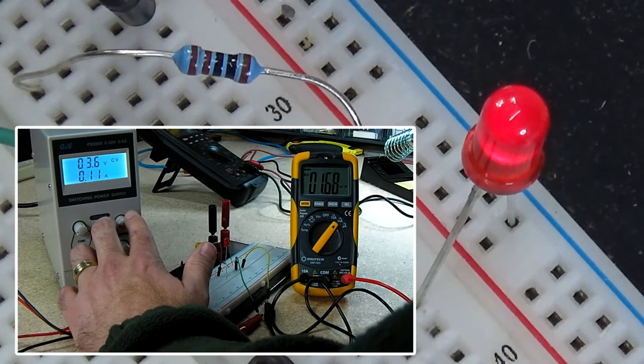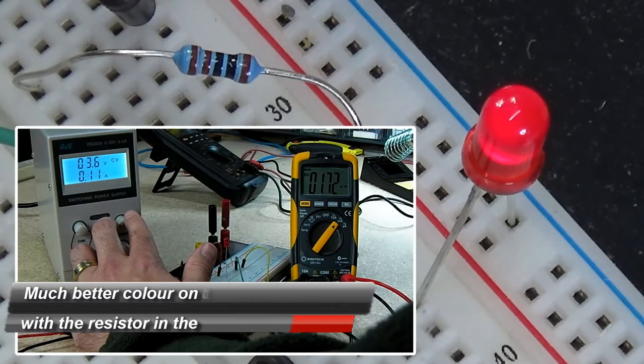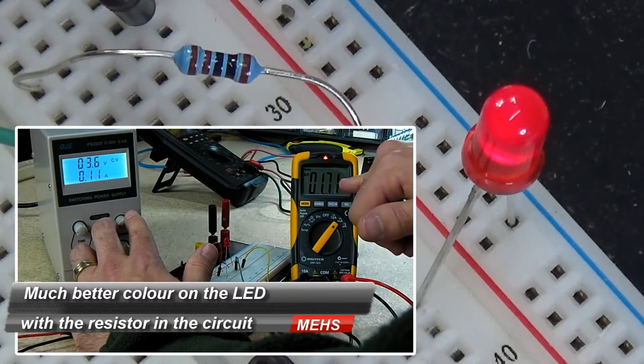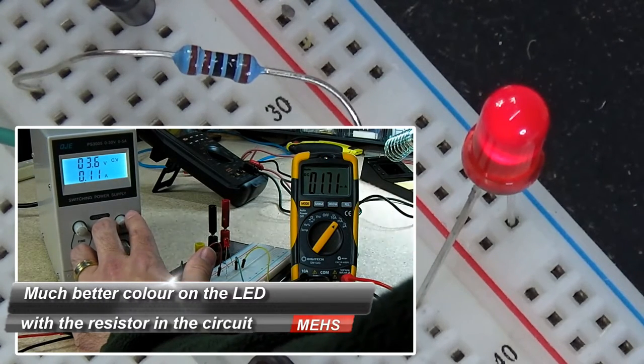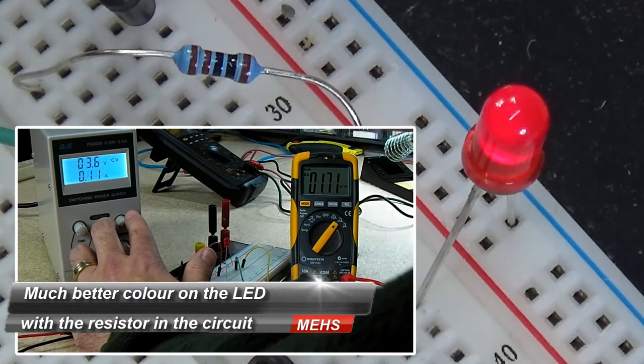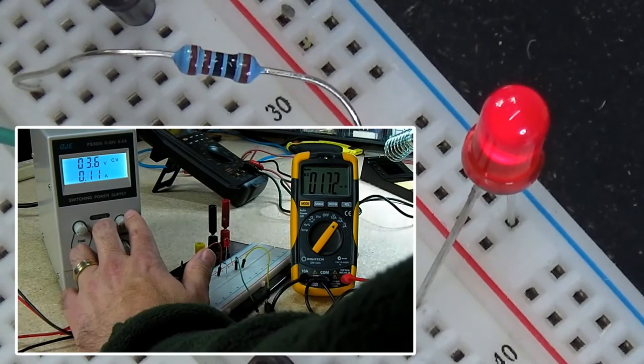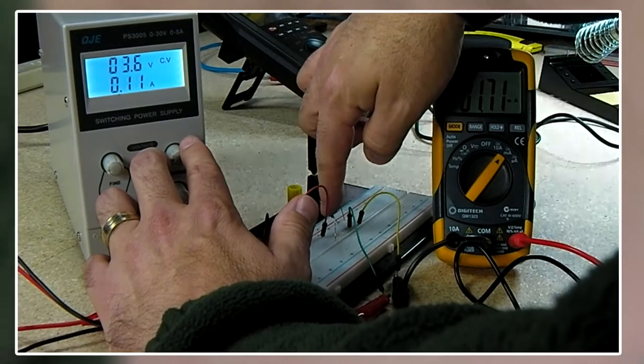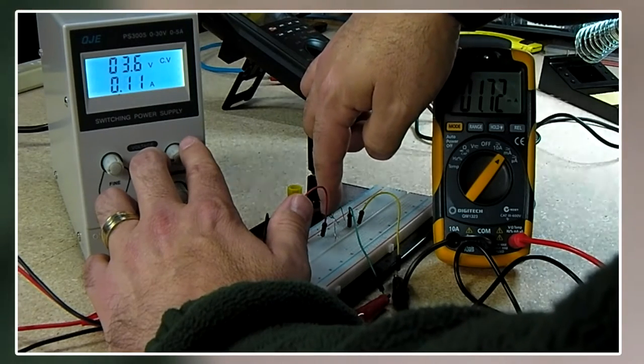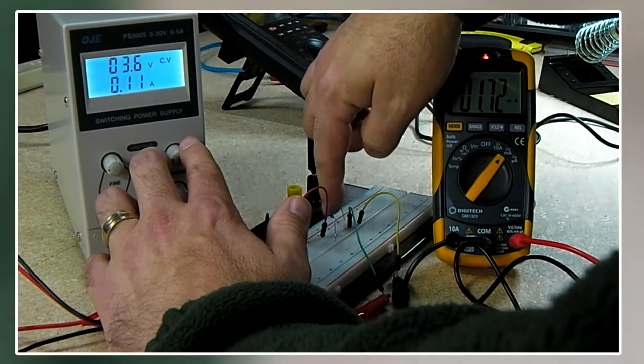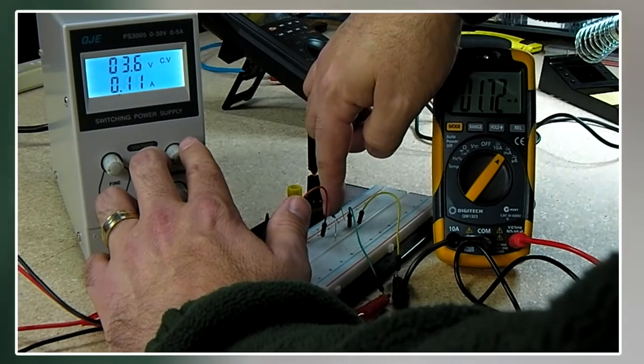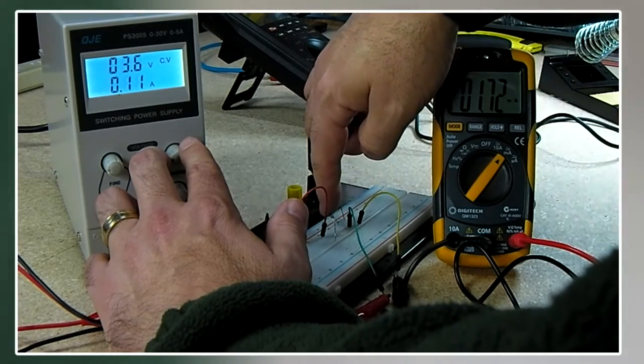Alright, so we're now getting some illumination on that LED. And that's 3.6V. And we're getting 1mA going through the actual circuit. So the LED is nice and protected by that resistor. And the resistor is a quarter watt resistor. And so they're rated in wattage. So this one's a quarter watt resistor. Not even getting warm at this stage.